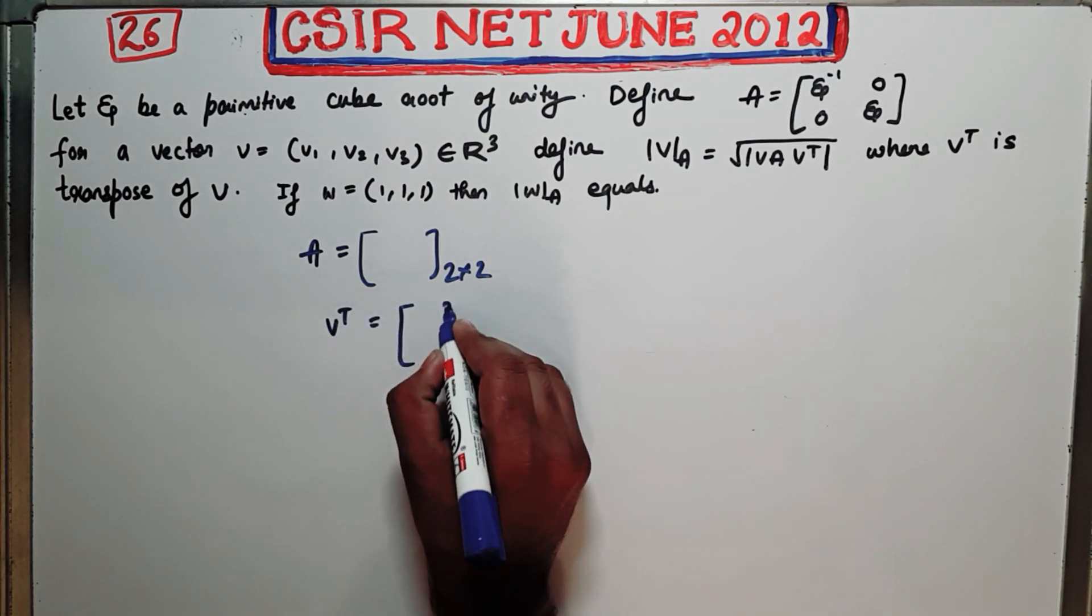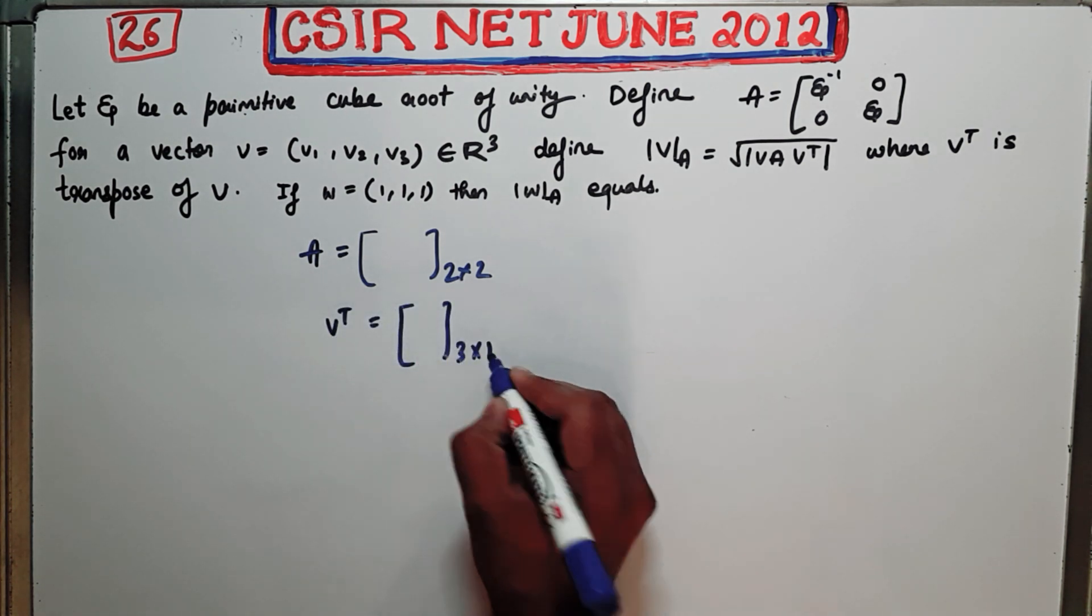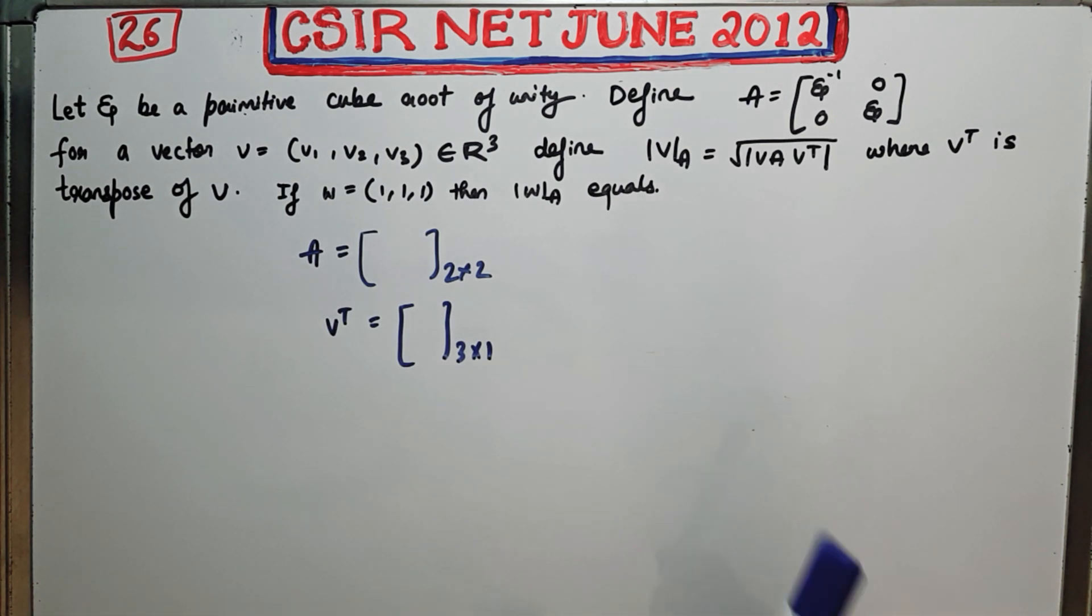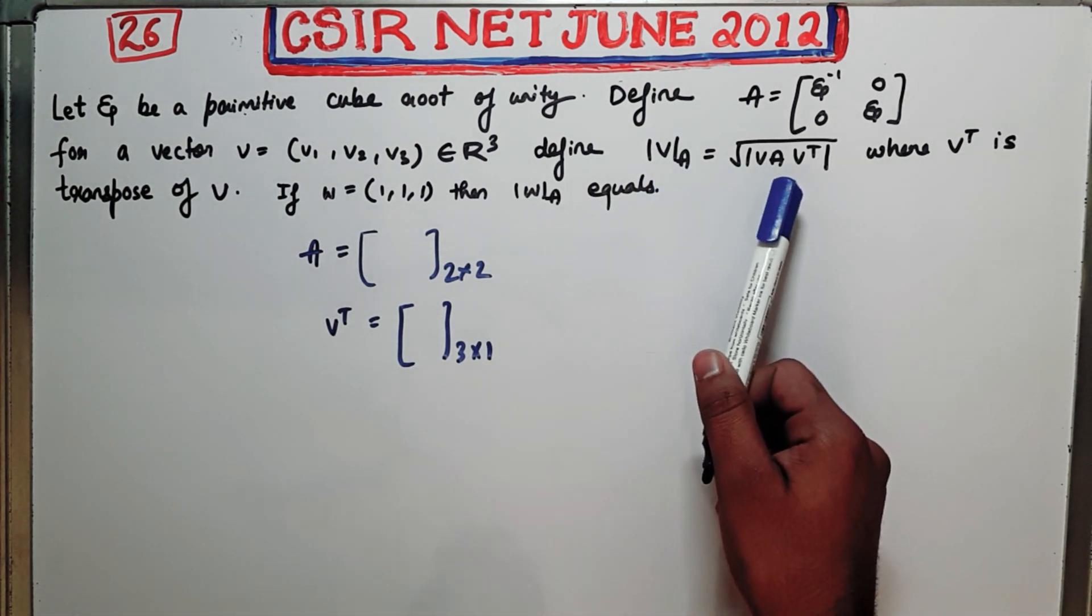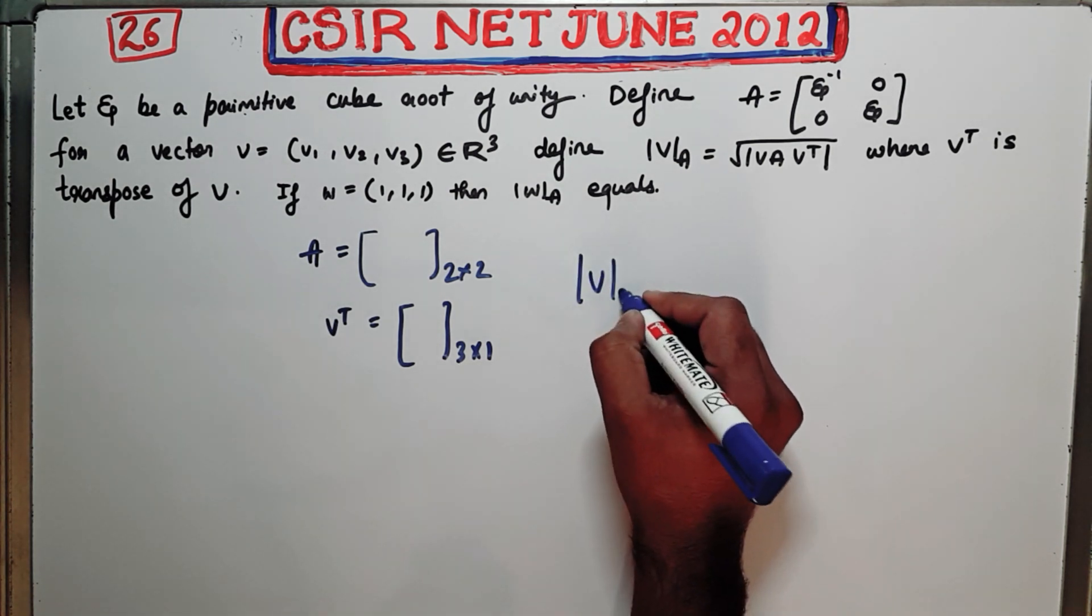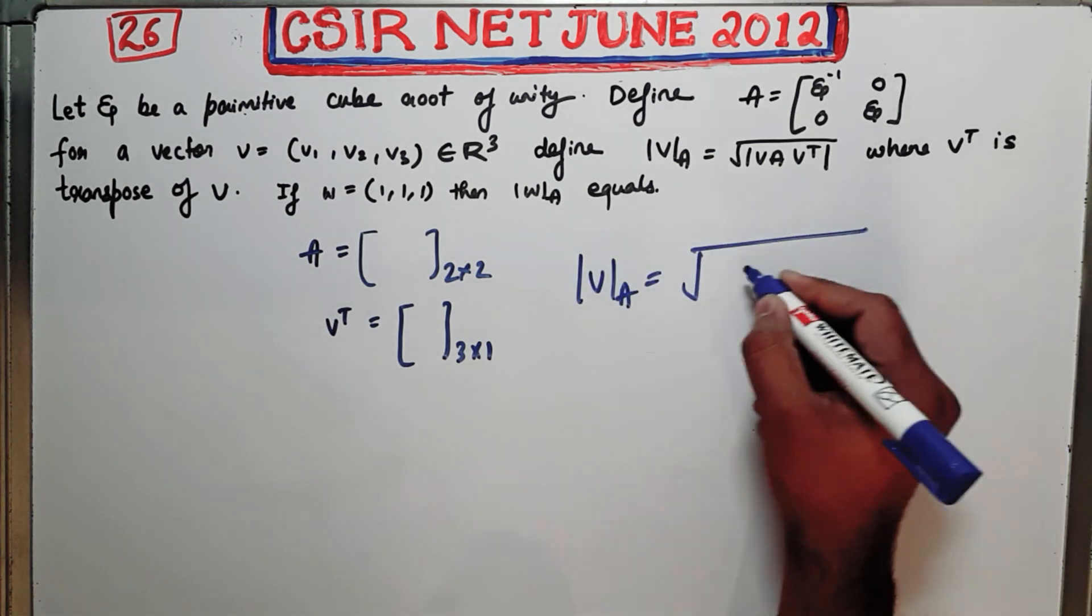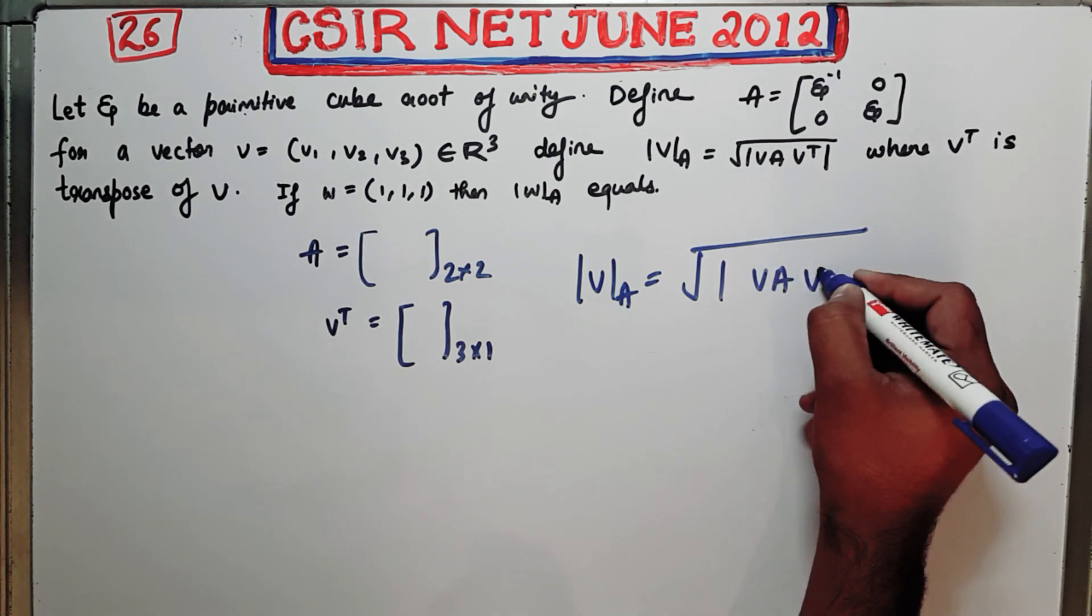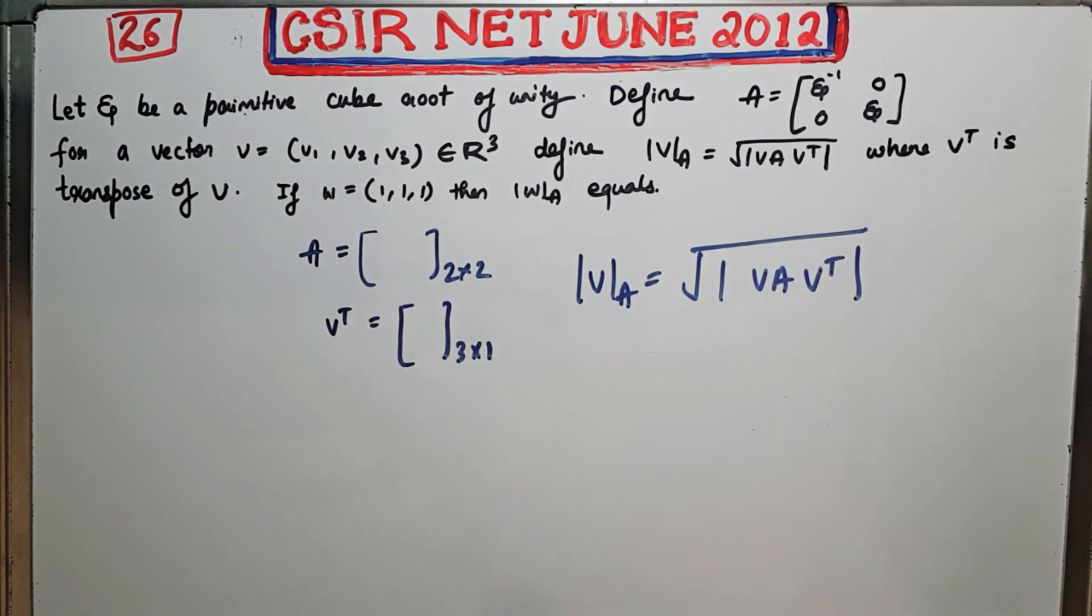Now they are defining this symbol as the product of these three matrices. ||V||_A is defined like this: V·A·V transpose. That means you have to multiply this matrix A with this V transpose.